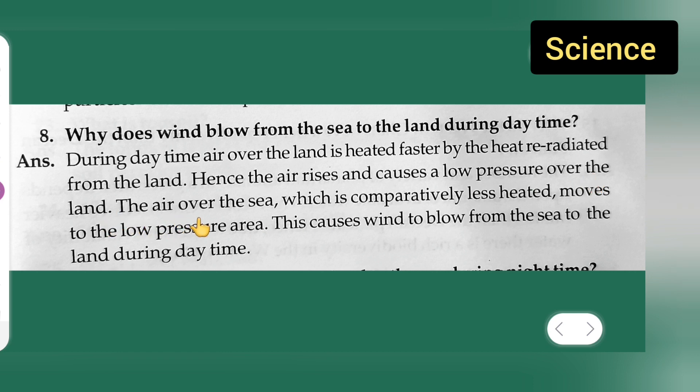The air over the sea which is comparatively less heated moves to the low pressure area. This causes wind to blow from the sea to the land during daytime.